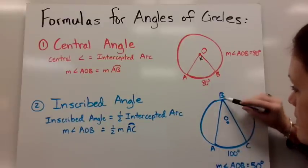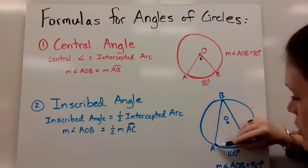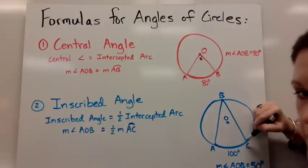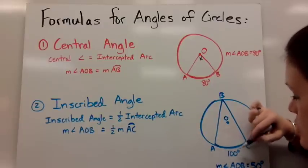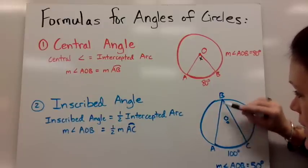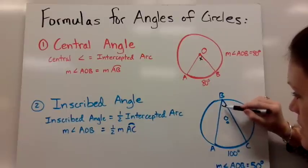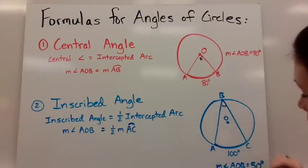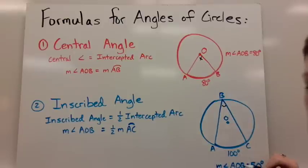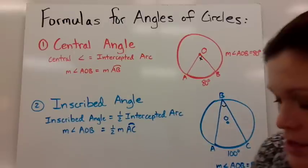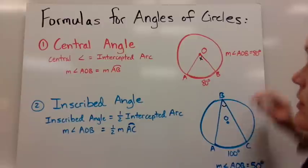So if I have angle ABC and the arc that it intercepts is arc AC and that's equal to 100 degrees, then the angle that's intercepting that arc in an inscribed angle is half of the measure of that arc. So angle AOB had a measure of 50 degrees. So write these two down and let's look at a few more.